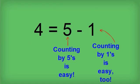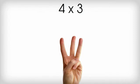So what we're going to do is count by fives, and then we're going to count backwards by ones. So let's say we're going to do four times three. Let's count by threes using our fingers. Five, ten, fifteen.